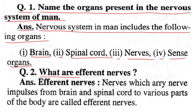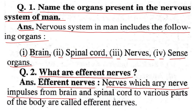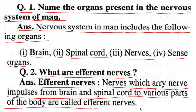Question: What are efferent nerves? Answer: Efferent nerves are nerves which carry impulses from the brain and spinal cord to various parts of the body.